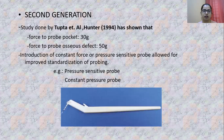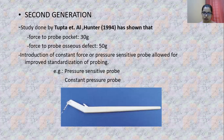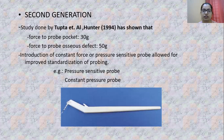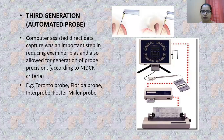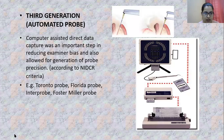Second-generation probes: a study by Tipta et al. and Hunter in 1994 showed that the minimum force needed to probe a pocket is 30 grams and to probe a bony defect is 50 grams. Based on these findings, they developed a pressure-sensitive probe, allowing improved standardization. An example is the constant pressure probe. Third-generation probes are automated, eliminating examination bias — examples include the Toronto probe, Florida probe, Interprobe and Foster Miller probe.